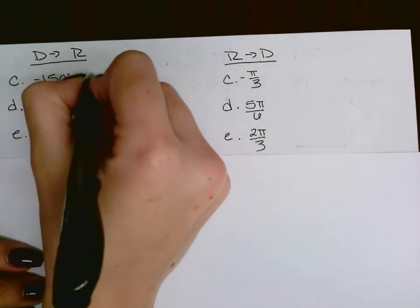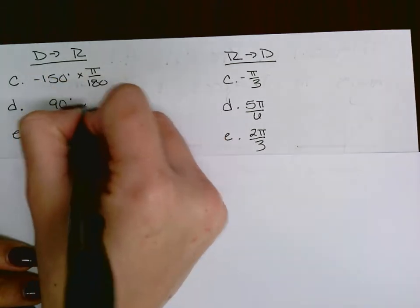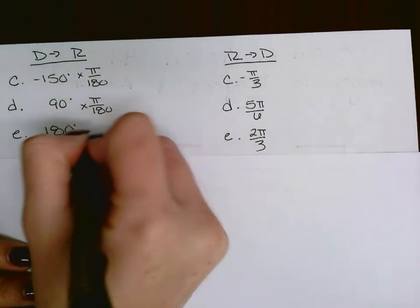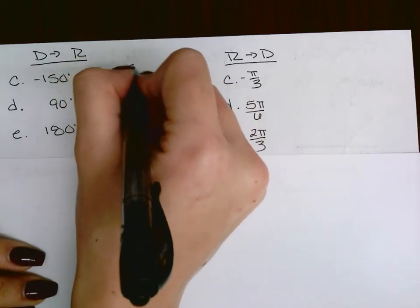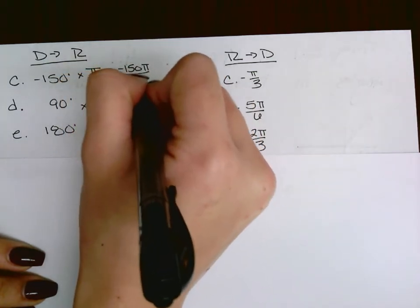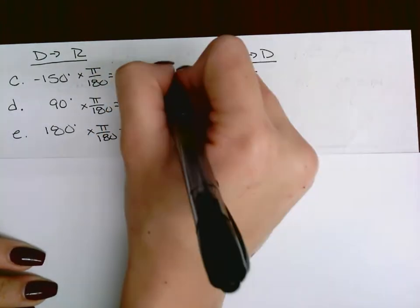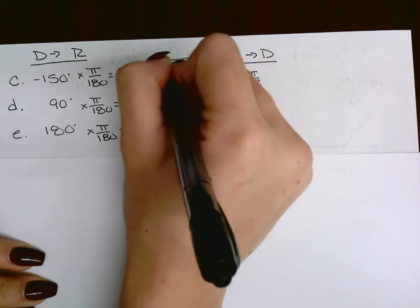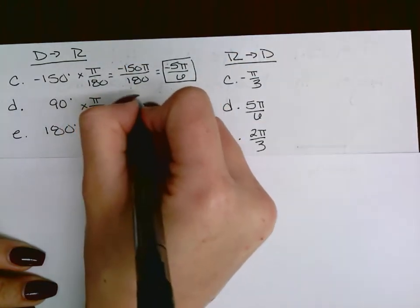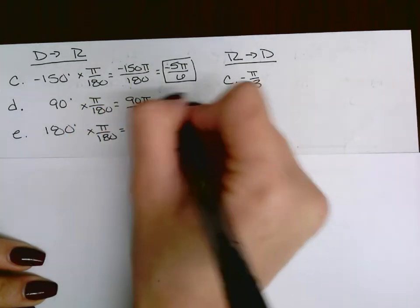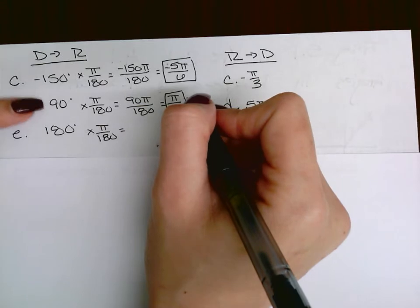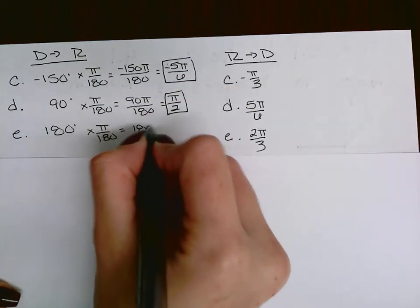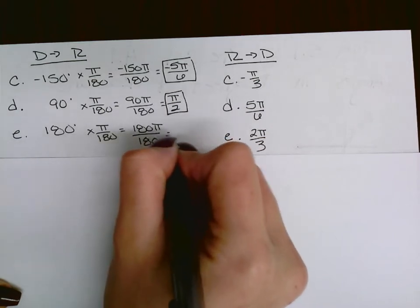Continuing with degrees to radians, multiplying by pi over 180 for all of these. Negative 150 pi over 180 reduces to negative 5 pi over 6. Then 90 pi over 180 reduces to pi over 2 — which matches what we saw earlier, so that should start to stick. And 180 pi over 180 leaves you with just pi.